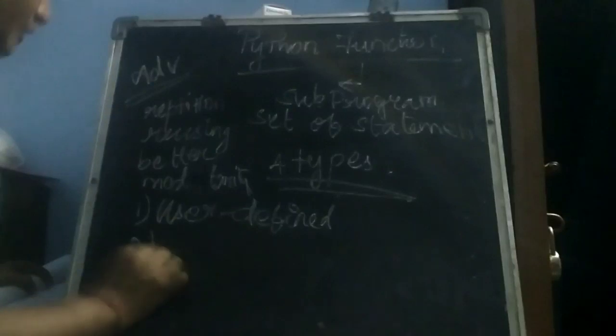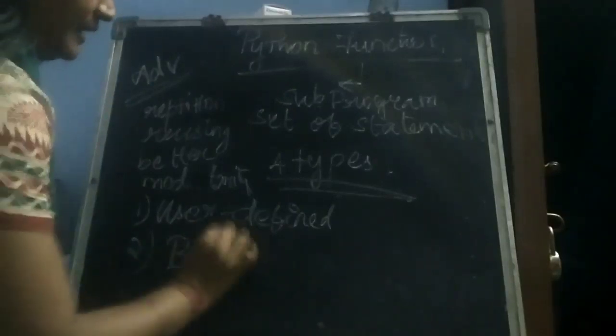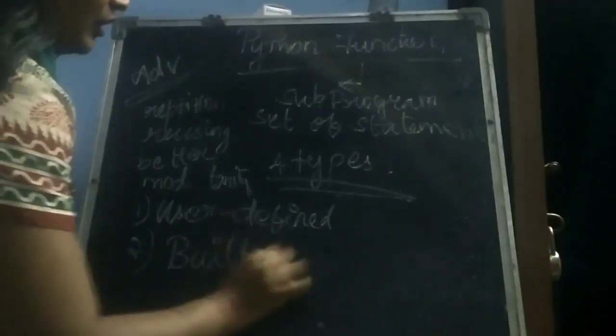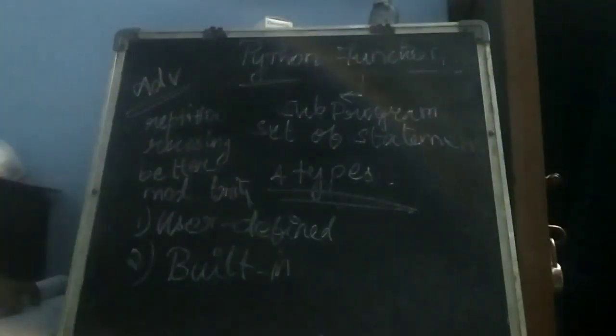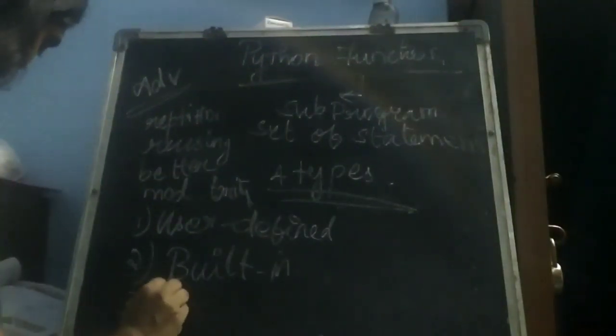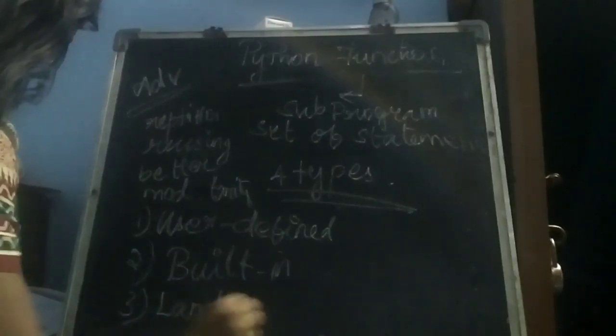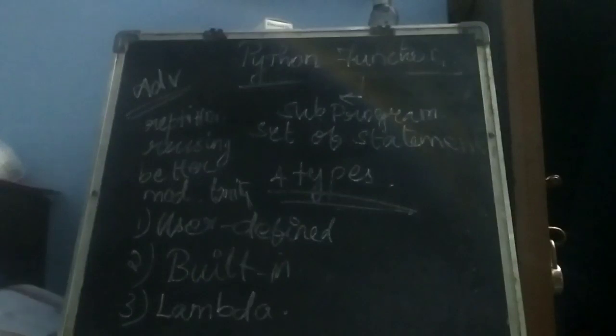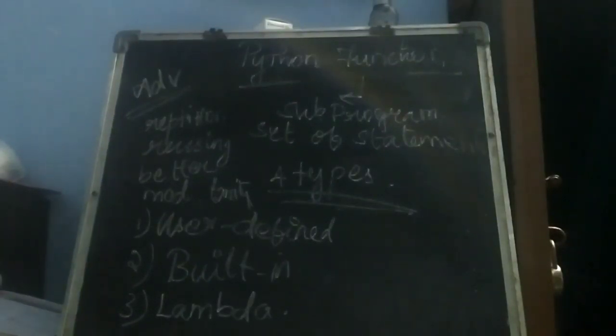The next type is a built-in function. Built-in functions means functions that the Python developer has already created. Next, we are going to have lambda functions. Lambda functions are a new concept — a lambda function is nothing but an anonymous, unnamed function.